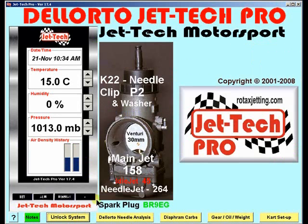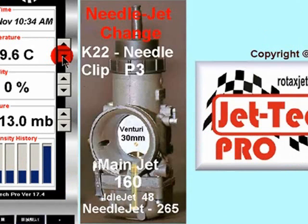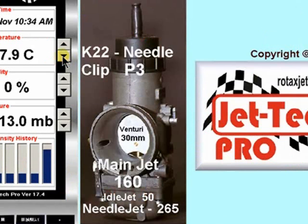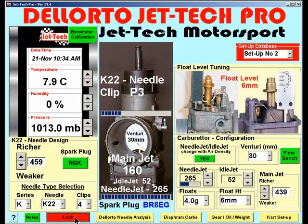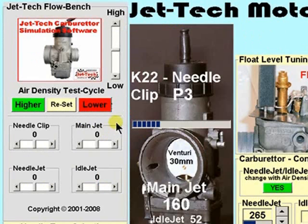To quickly demonstrate that, if I settle down in temperature you will notice not only the washer and main jet changing but also the idle jet and needle jet. JetTech's internal software dynamic simulation model can be further enhanced by the use of JetTech FlowBench, in which you can adjust individually the rate of change with air density of the needle clip, main jet, idle jet and needle jet.